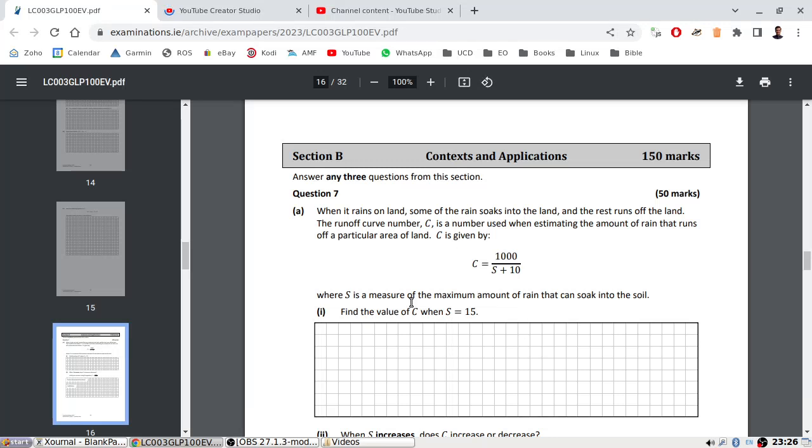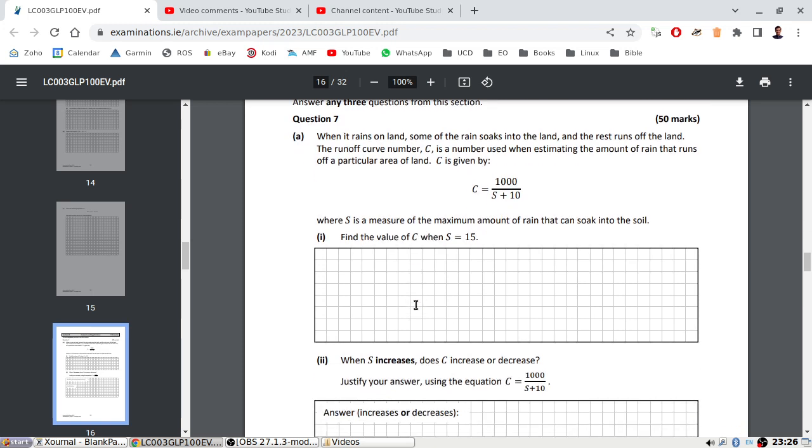Okay, answer three. When it rains on land, some of the rain soaks into the land and the rest runs off the land. The runoff curve C is a number used when estimating the amount of rain that runs off a particular area of land. C is given by that, where S is a measure of the maximum of the rain that gets on the side. Find the value of C when S is 15.